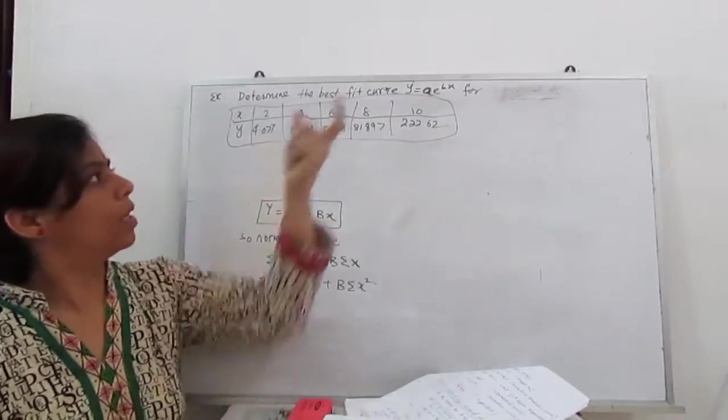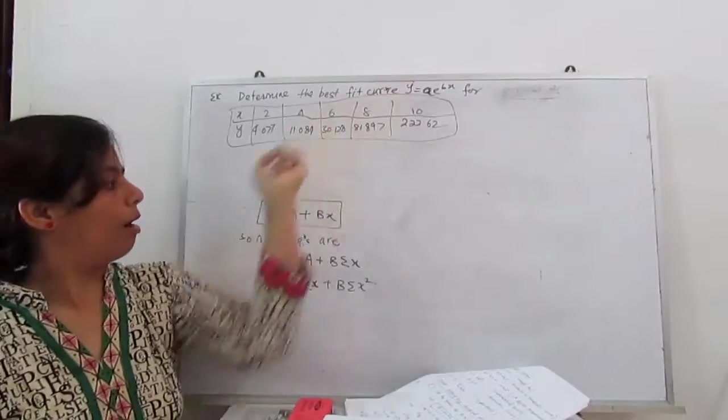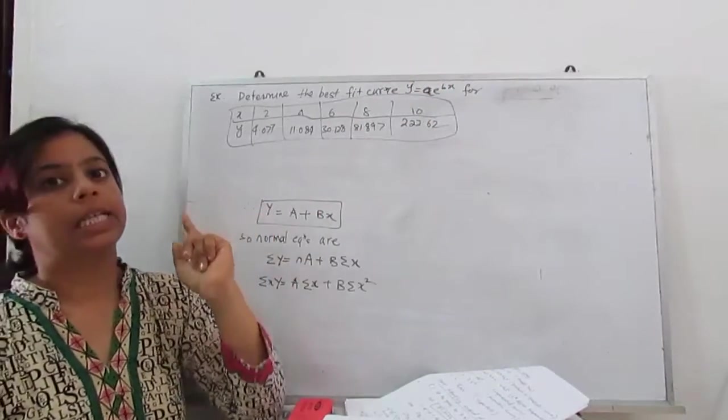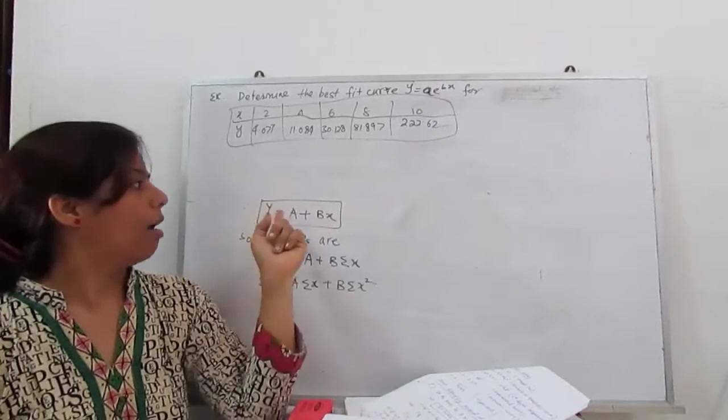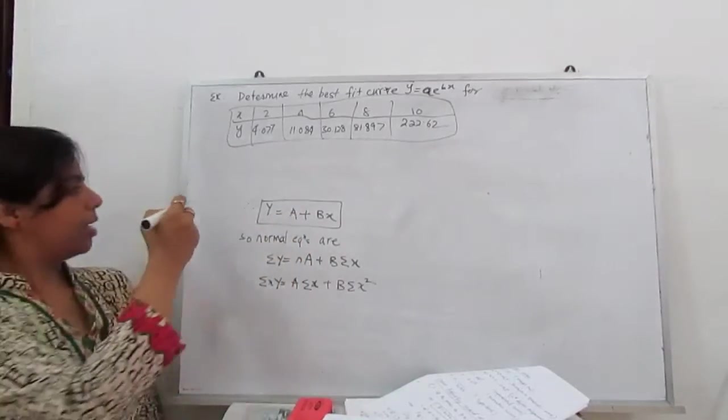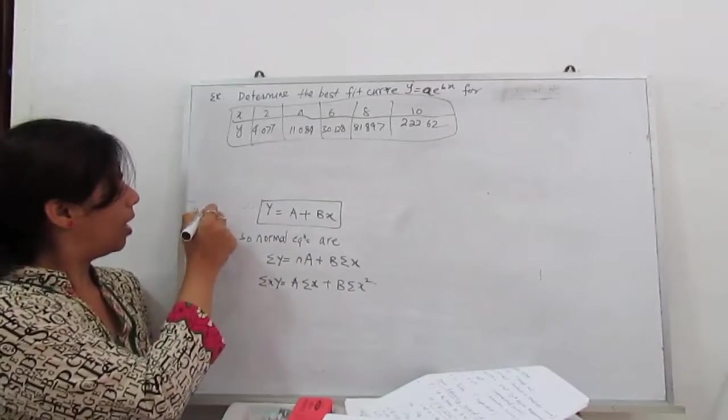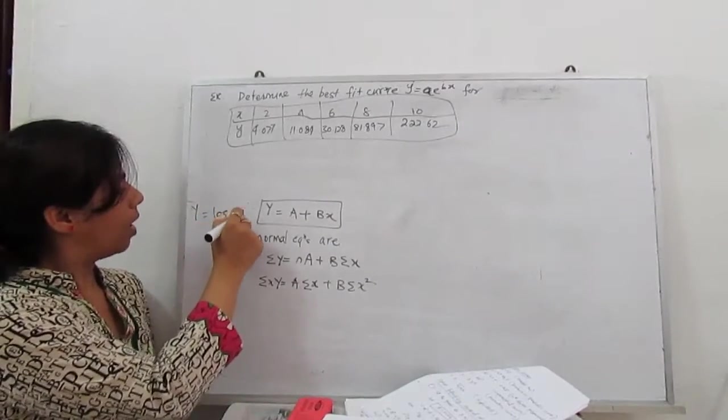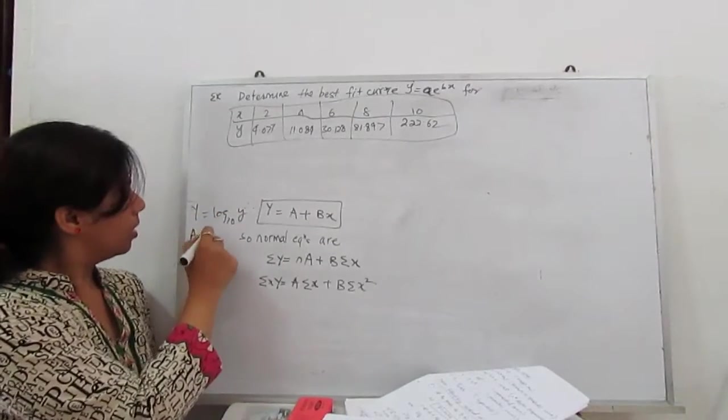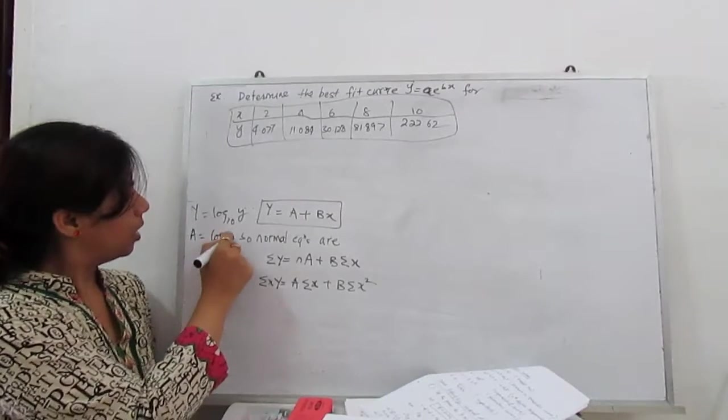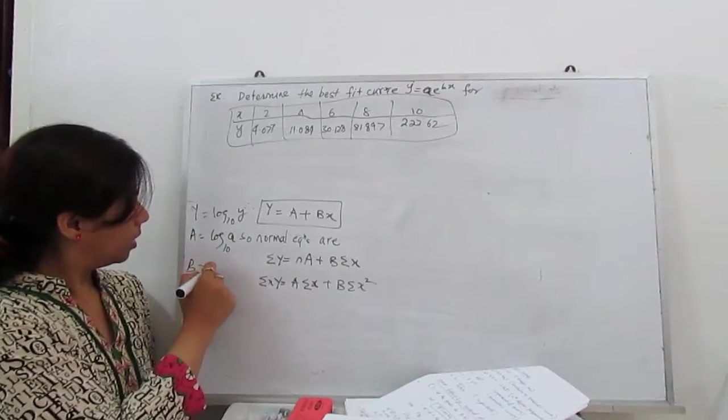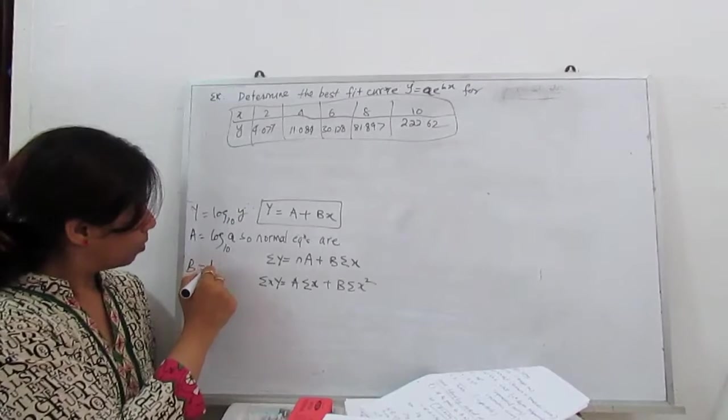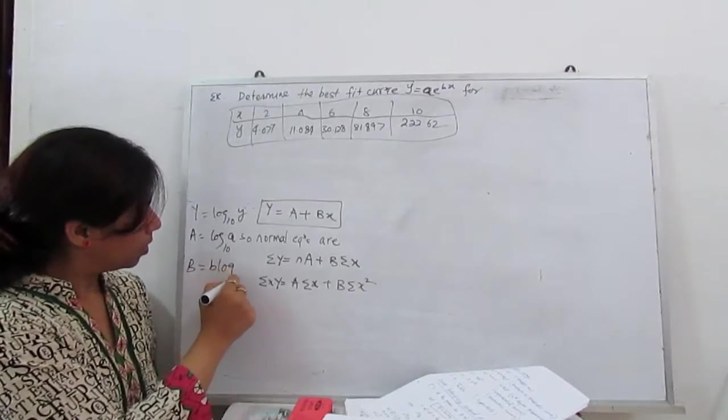So what we have to do, first we have to take antilog. So our capital Y is log y. Our capital A is, I can rewrite here, capital Y is log base 10 y, capital A is log base 10 A and B is small b log base 10 e.